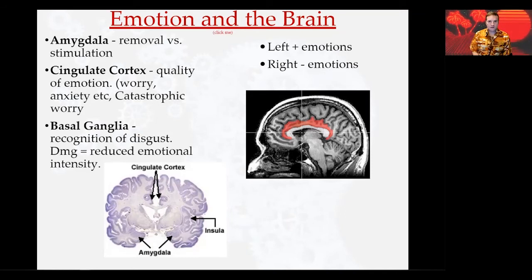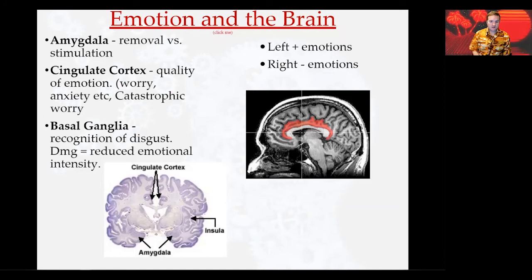The cingulate cortex is a structure we haven't discussed yet, but there's a link between the amygdala and other subcortical structures. The emotional quality of pain is often processed here. High activation of the cingulate cortex can lead to worry, anxiety, and catastrophizing — which is basically when you take something small and blow it out of proportion.